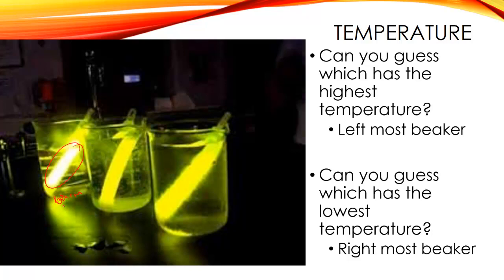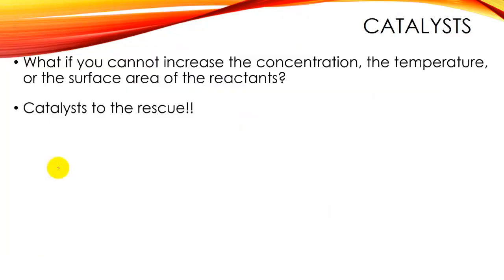Notice how bright the glow stick in the warm water beaker is — that brightness tells me it has the highest temperature. There's actually a funny video of a kid putting a glow stick in a microwave — do not do that. The room-temp water is next, and the cold water glow stick is harder to see. The warmest water produces the brightest glow because those molecules are slamming into each other at a faster rate.